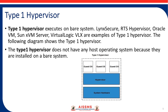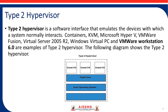Each guest machine has its own operating system, meaning any problem that occurs in one guest operating system has no effect on the other guest operating systems. This is why Type 1 hypervisor is mostly used in the industry, because they have dedicated servers for the guest operating systems.